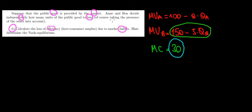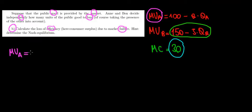If they decide independently, then every consumer is going to think about his own marginal utility and the respective marginal cost. They're not going to think about the fact that the public good gives utility to the other person as well. Meaning that when N decides for herself, her marginal utility equals the marginal cost.